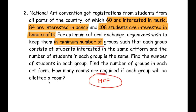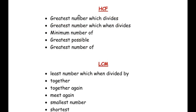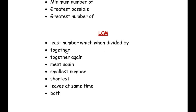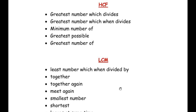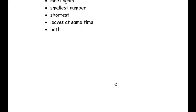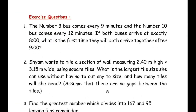Now let us look at the keywords. For HCF, look for: 'greatest number which divides,' 'greatest number which when divides,' 'minimum number of,' 'greatest possible,' 'greatest number of,' 'largest possible.' For LCM, look for: 'least number which when divided by,' 'together,' 'together again,' 'meet again,' 'smallest number,' 'shortest,' 'leaves at same time.' I may have missed some keywords — let me know in the comments. Use logical understanding of the question first; keywords are a secondary aid.